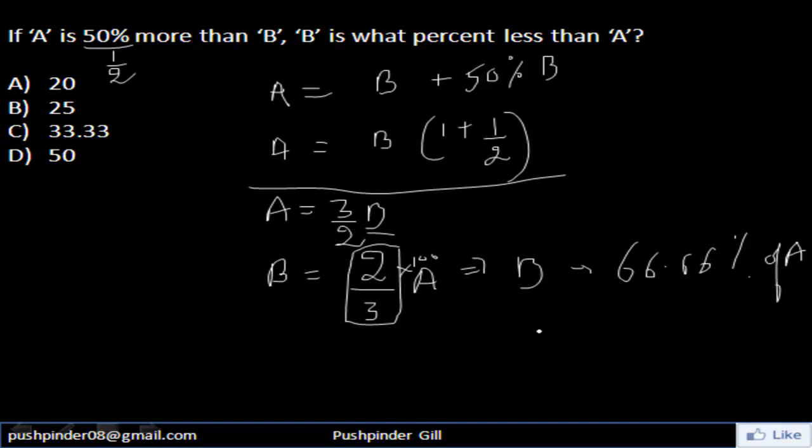In case you go over to our Facebook page where you find Facebook notes, percentage notes, in that you will find the conversion of all the base fractions to percentage. So 2/3 is equivalent to 66.66%. So B is 66.66% of A.